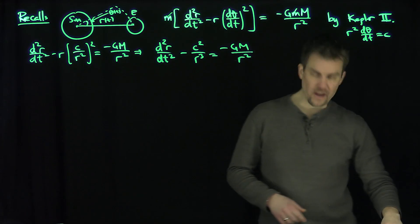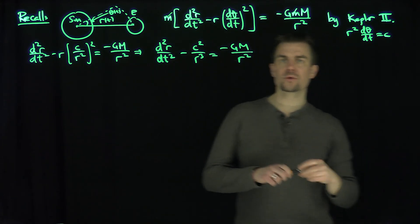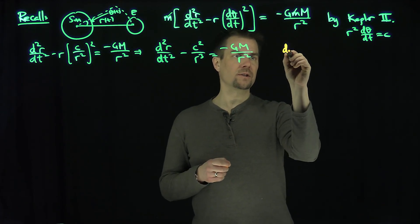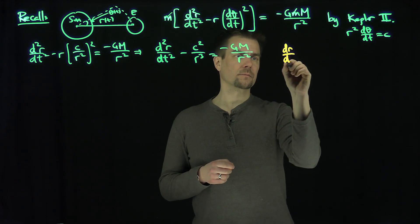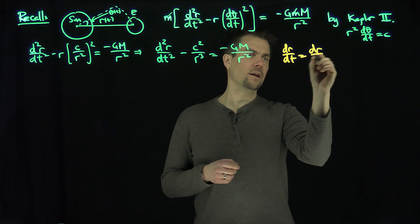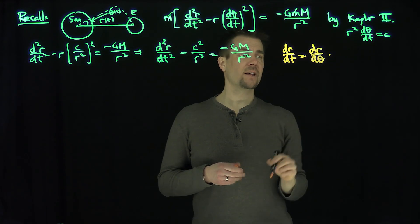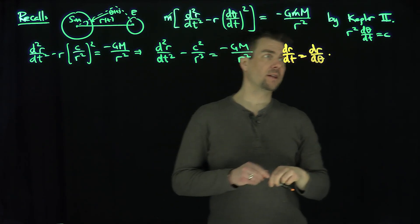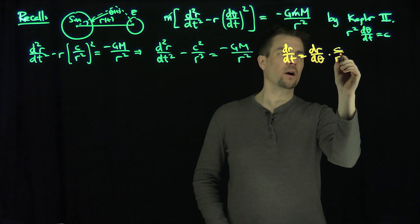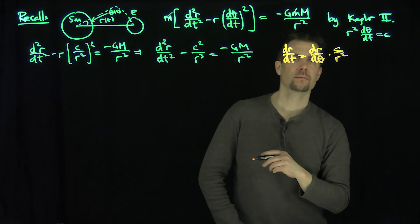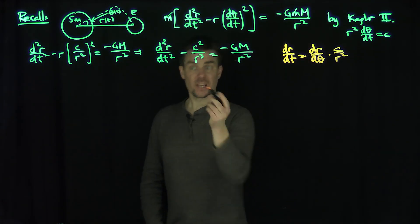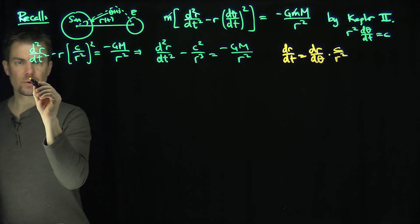I want to put everything in terms of theta. We notice that dr/dt equals (dr/dθ) times (dθ/dt), and dθ/dt is c over r squared. So that is what dr/dt is, and we can compute the second derivative as well.